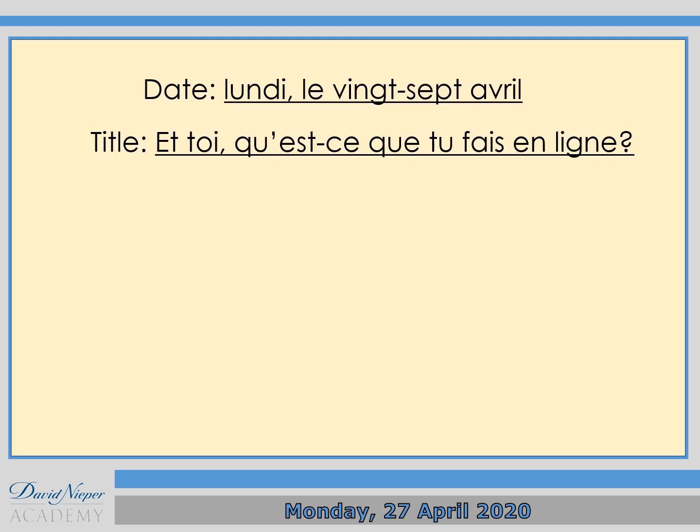In your exercise book, if you've got your exercise book with you, please write down the date and title. Lundi le 27 avril — the title is Et toi, qu'est-ce que tu fais en ligne? — meaning, 'And you, what do you do online?' If you haven't got your exercise book, you can use a separate book only for French, or type your notes on a Word document and save it.